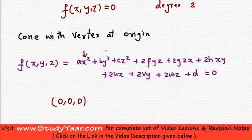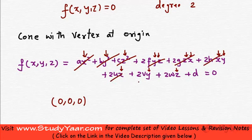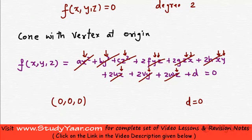When we replace x, y, z with 0, 0, 0, every term becomes 0, and we are left with d = 0. So one thing we know for a cone having a vertex at the origin is that it does not have a constant term.